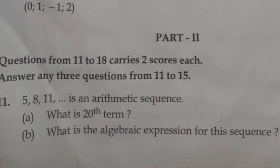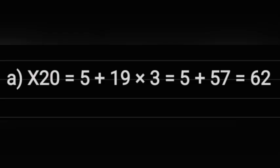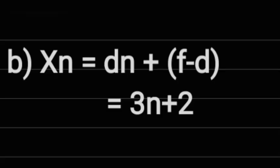Question 11: 5, 8, 11 is an arithmetic sequence. A: What is the 20th term? B: What is the algebraic expression for this sequence? Answer A: x20 equals 5 plus 19 times 3 equals 5 plus 57 equals 62. Answer B: xn equals dn plus f minus d equals 3n plus 2.